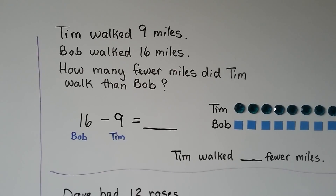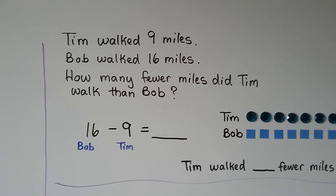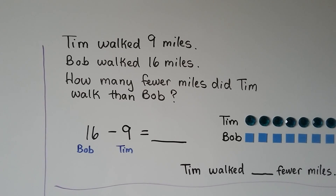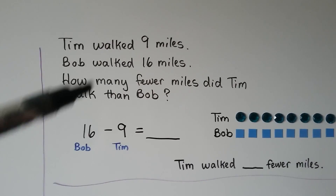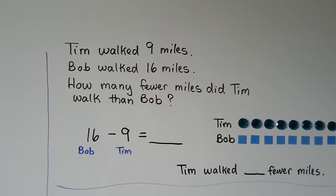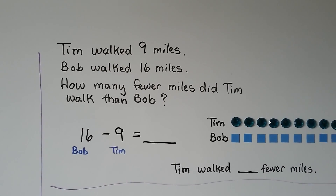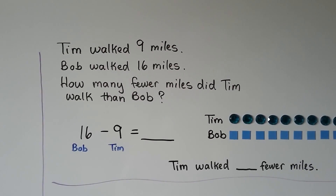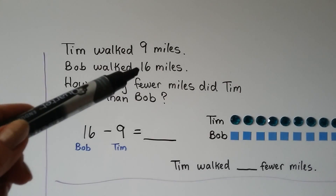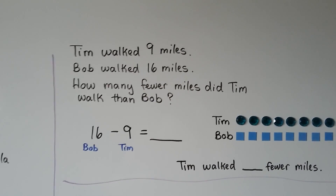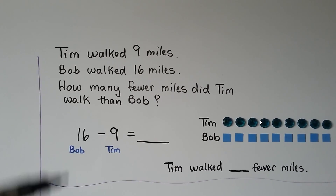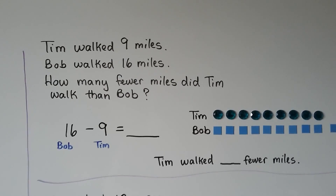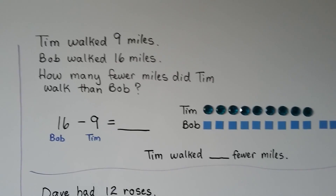Tim walked 9 miles. Bob walked 16 miles. How many fewer miles did Tim walk than Bob? The word 'fewer' tells us it's going to be a subtraction sentence — a subtraction problem. So what do we need to find? We need to find how many fewer miles Tim walked than Bob. We can see Bob has a bigger number of miles. We're going to use that Bob walked 16 and Tim walked 9. We can act it out with counters.